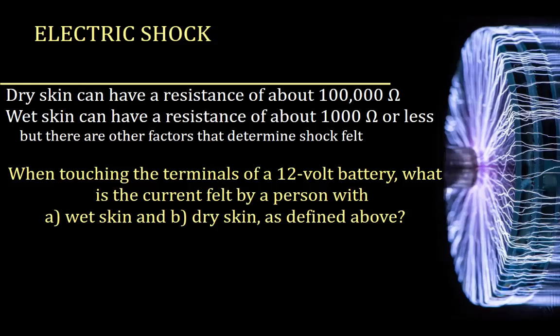Let's talk about your body and resistance. Dry skin can have a resistance of about 100,000 ohms. Wet skin has a resistance of about 1,000 ohms or less — wet skin is much better at conducting electricity than dry skin. When touching the terminals of a 12-volt battery, what is the current felt by a person with wet skin? Dry skin as defined above. We can use Ohm's law to calculate this.